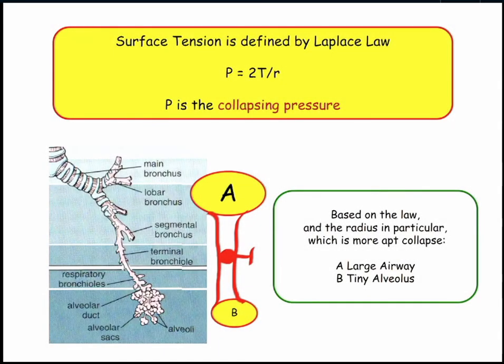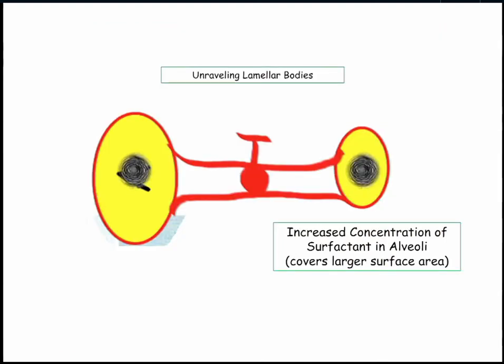The alveolus will collapse unless we can do something about surface tension — and that's what surfactant is about. In the small alveoli, you put one of those lamellar bodies in and roll out that rug — the same 10-by-12 rug covers a lot of surface area in a small room. The large alveolus doesn't get as much surfactant per unit area. This is really important in terms of maintaining the patency of alveoli.